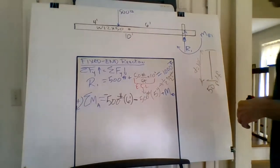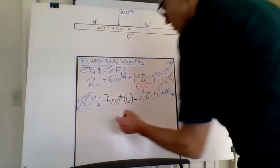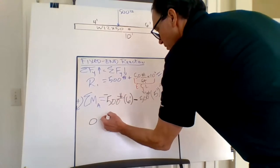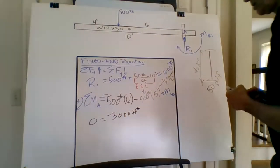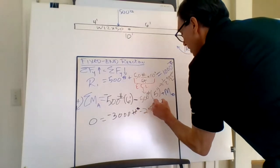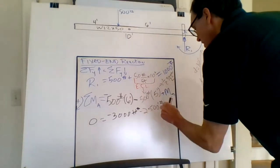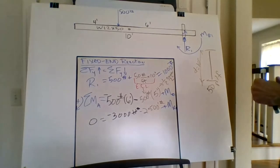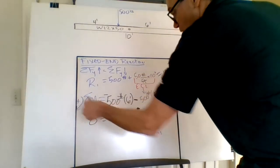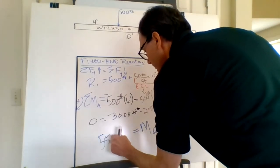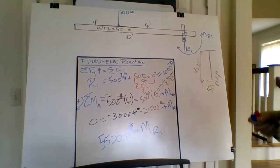Doing the math: zero equals negative 3,000 foot-pounds minus 2,500 foot-pounds plus moment at R1. So the moment at R1 — also at point A — equals 5,500 foot-pounds. Note: foot-pounds, not feet per pound or pounds per foot.